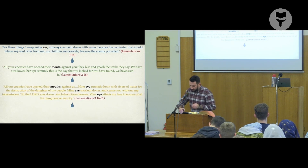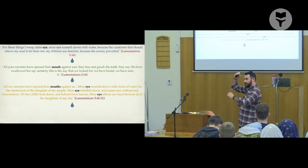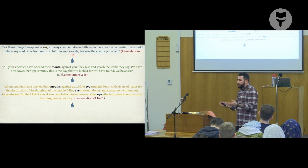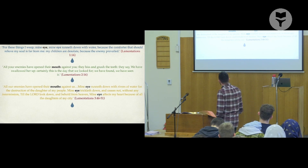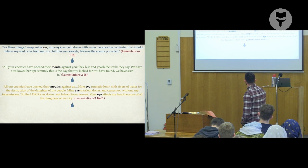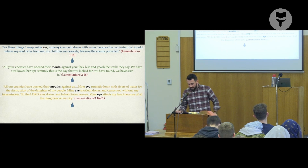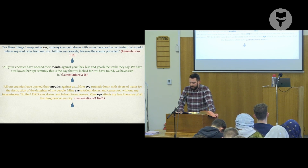In chapter three at verse 46, where the Pe comes in: 'All our enemies have opened their mouths against us' — and because of this, 'mine eye runs down with rivers of water.' Is it weeping because the law of God has been broken? No — it's because of the destruction of the daughter of my people. Jerusalem responds to the enemy by weeping over physical destruction. There is no longing for God's salvation, no mouth taking in the commandments of God to repent.